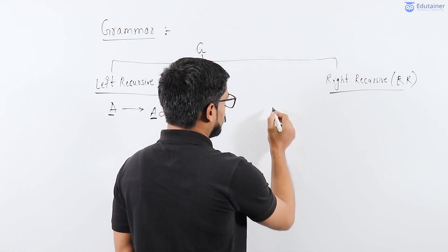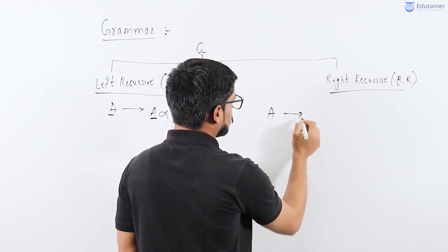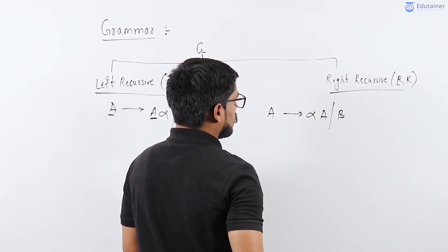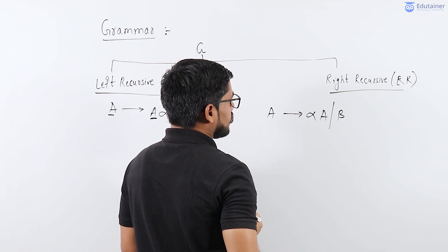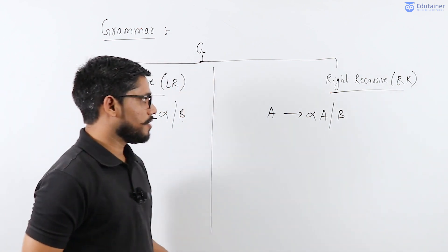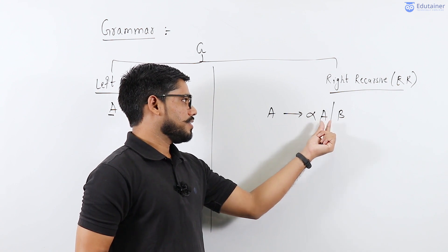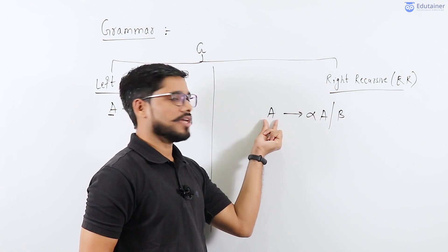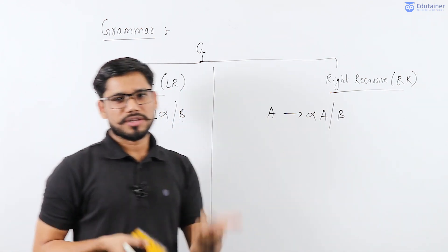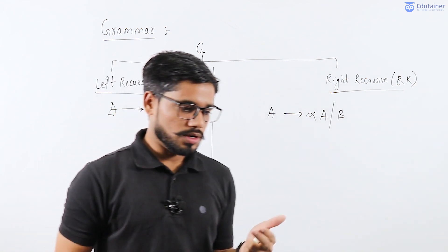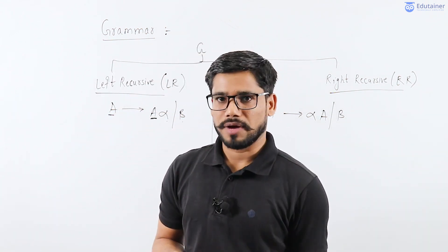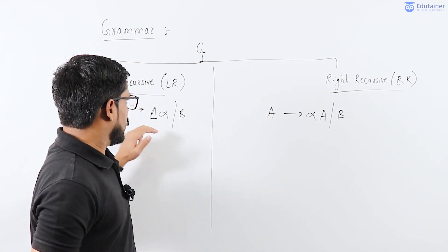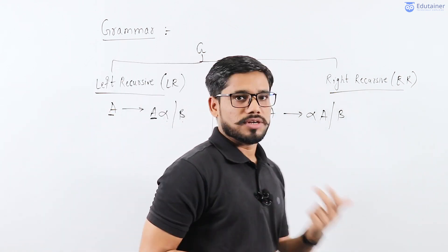In right recursive grammar, the production will look like this: A derives alpha A followed by beta. How can you identify right recursive grammar? In right recursive grammar, in the right hand side, the right most term is a variable which is also present in the left hand side. It is a kind of recursion. If you want to design a compiler and you are handling left recursive and right recursive grammar, you can think of it as a recursion concept.